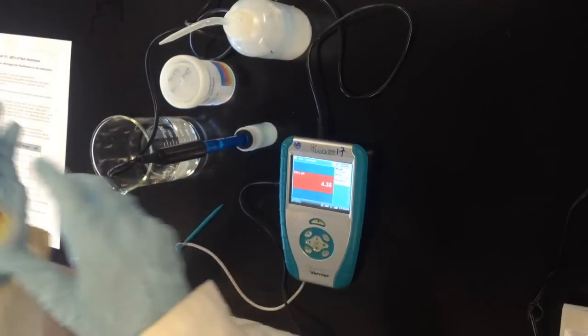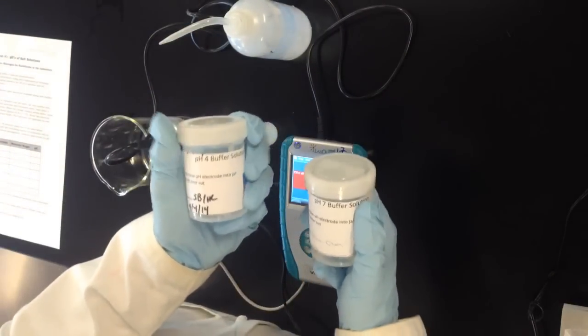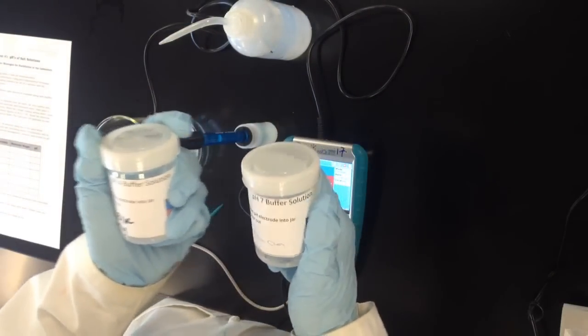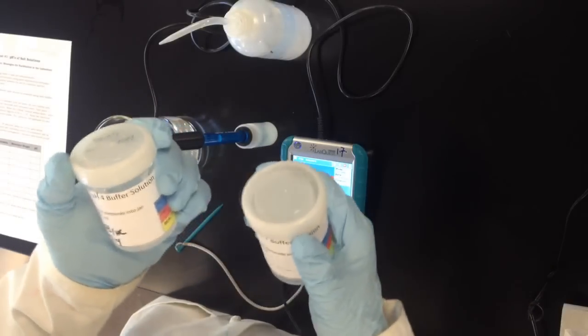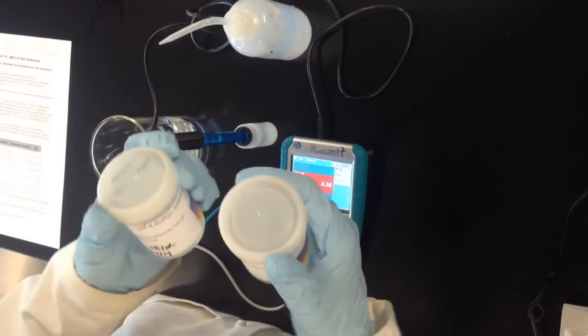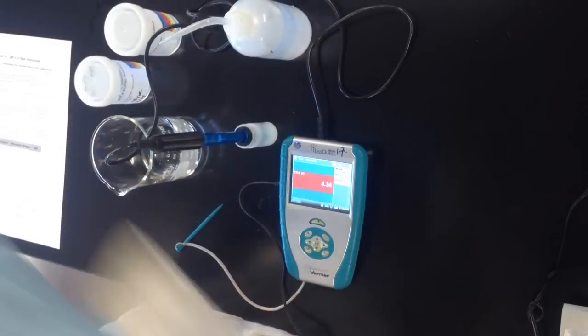To do this we're going to use two different buffer solutions with a set pH: a pH 7 buffer and a pH 4 buffer. When you calibrate, generally the true or known values you use should be in the range of the pH as you're going to get, and 4 to 7 is pretty close to most of the pHs we'll see in our experiments.